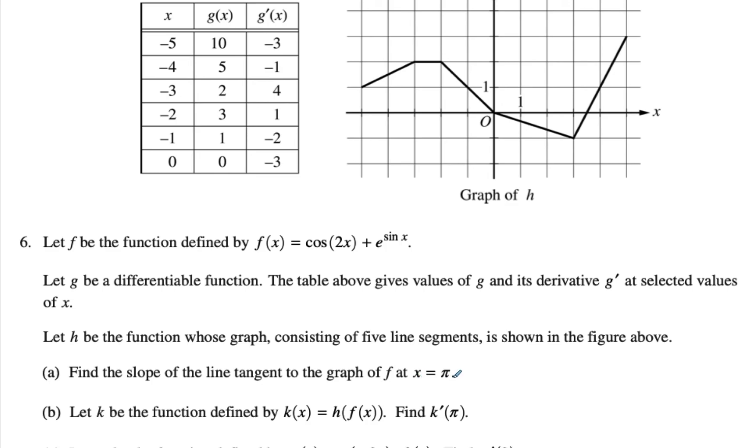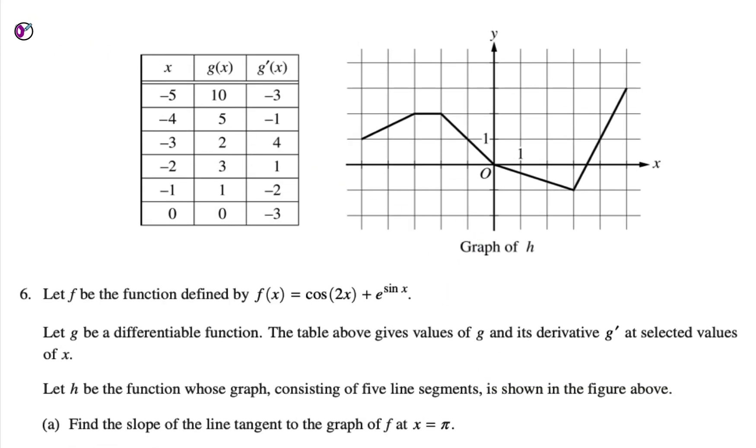So then we need to figure out the value and then the slope. Let's try to look at the first derivative first. So we just need to find the slope. f prime equals, the derivative of cosine 2x, so we get negative 2 sine 2x, plus derivative of sine becomes cosine, so we have cosine times e to the sine x.